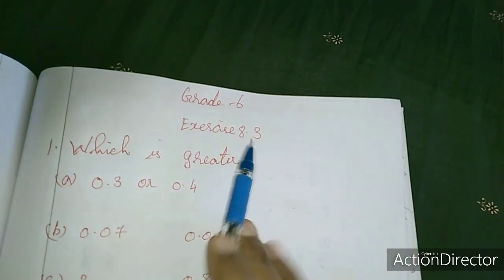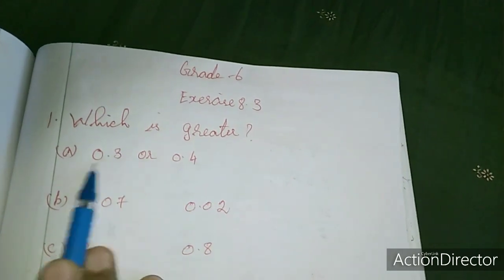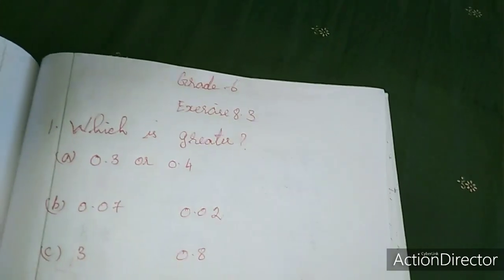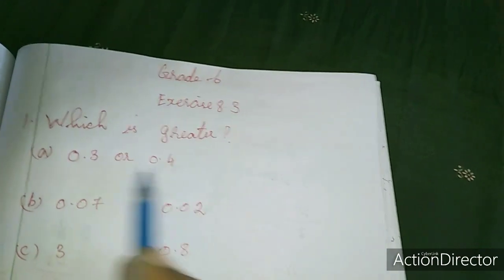Now exercise 8.3, for which is greater, we are going to compare the decimals and tell which is the greater number. First one, compare the decimals. When decimal numbers are equal, it means here is one digit and here is one digit.